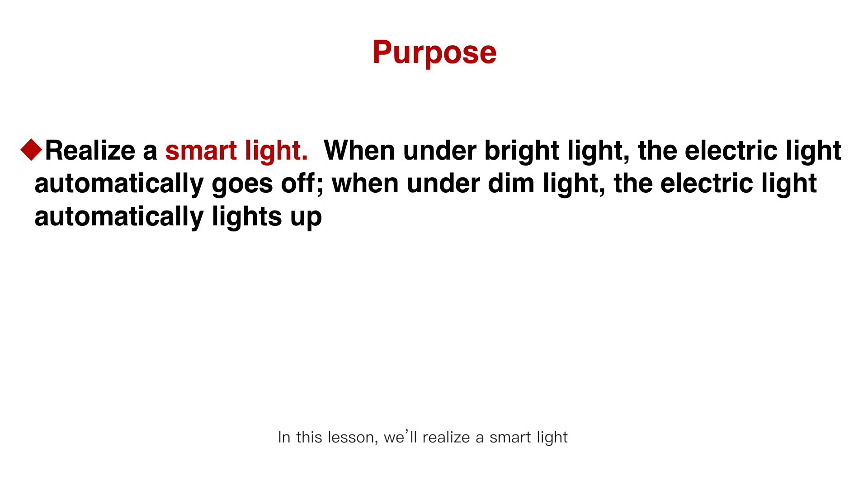In this lesson, we'll realize a smart light. If under an environment of bright light, the light automatically goes off. When under dim light, the light automatically lights up.